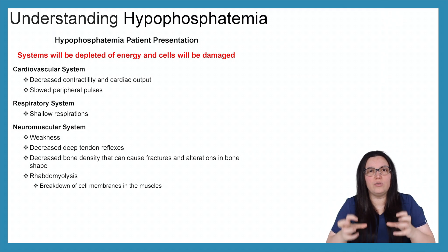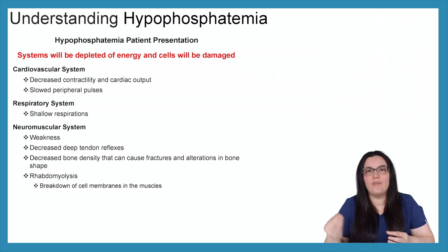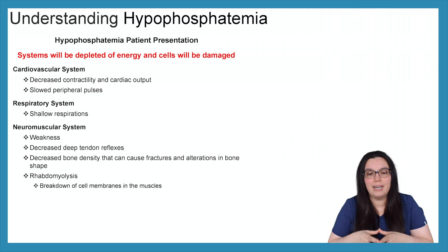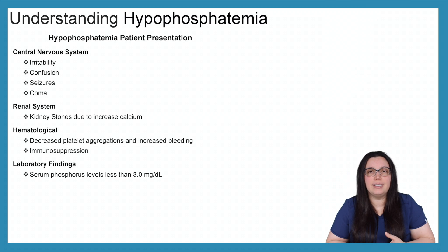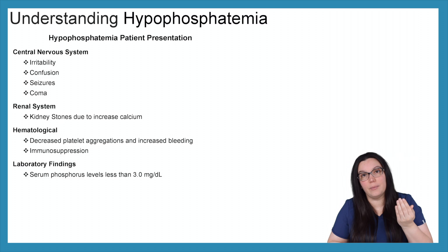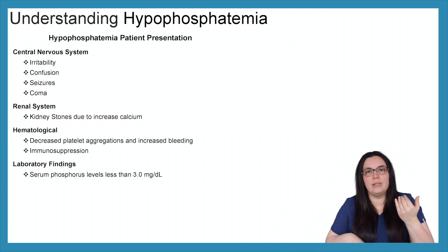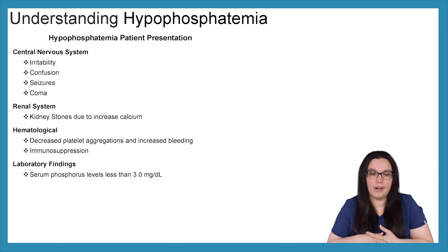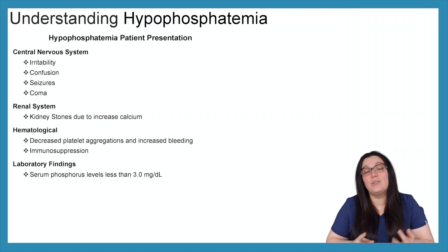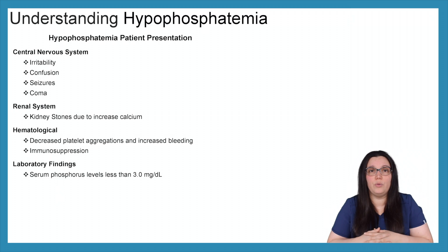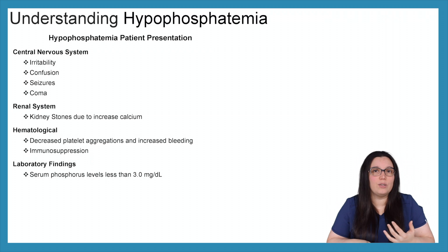We can even experience rhabdomyolysis due to the breakdown of cell membranes in our muscles, causing that really dark urine — because we don't have the phosphorus to maintain the phospholipid bilayer needed for cell membranes in our muscles. When it comes to our central nervous system, we're going to have irritability, confusion, seizures, and it can ultimately lead to coma if we don't correct it. Renally, you're going to see kidney stones due to that increase in calcium. Decreased platelet aggregation and increased bleeding can occur as well. We'll also see immunosuppression because we don't have the energy or means to maintain an appropriate immune system. Lab findings will show a serum phosphorus level less than 3 milligrams per deciliter.